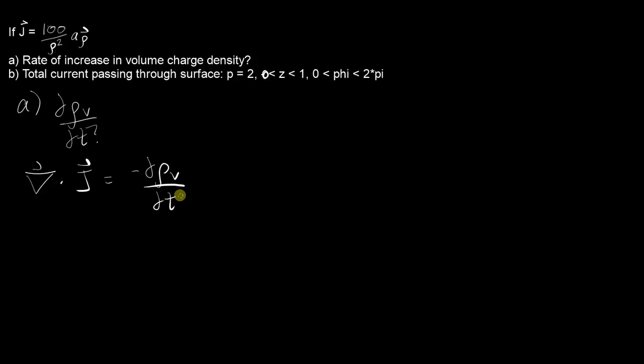So since there's only a rho component we'll just take divergence of the rho part, which is equal to 1 over rho times the derivative with respect to rho of rho times the rho component, which would be 100 over rho squared.